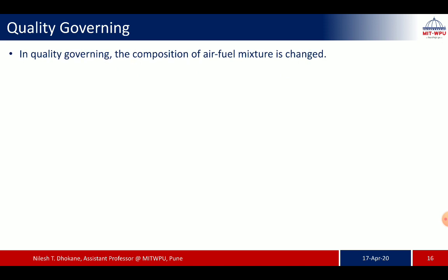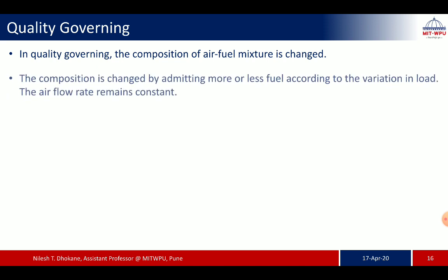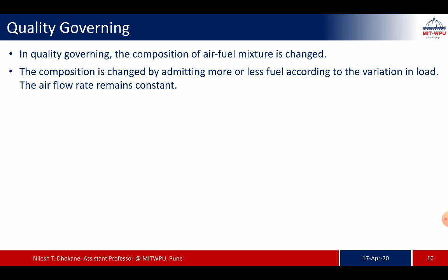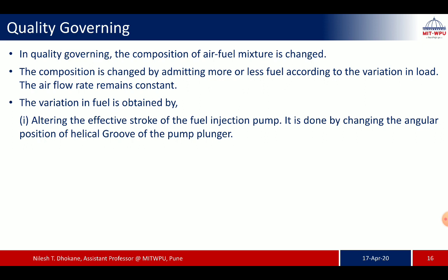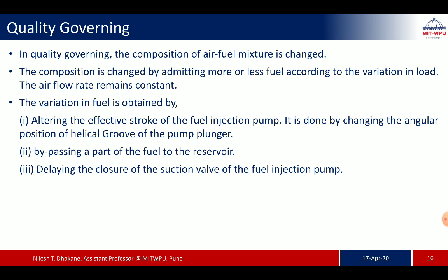In quality governing, the composition of the air-fuel mixture is changed by admitting more or less fuel according to the variation in load. The air flow rate remains the same; only the fuel supply is changed. The variation in fuel is obtained by: altering the effective stroke of the fuel injection pump in CI engines (done by changing the angular position of the helical groove of the pump plunger); bypassing part of the fuel back to the reservoir so only a partial amount is sent; or delaying the closure of the suction valve of the fuel injection pump. Quality governing is widely adopted in high-speed diesel engines.